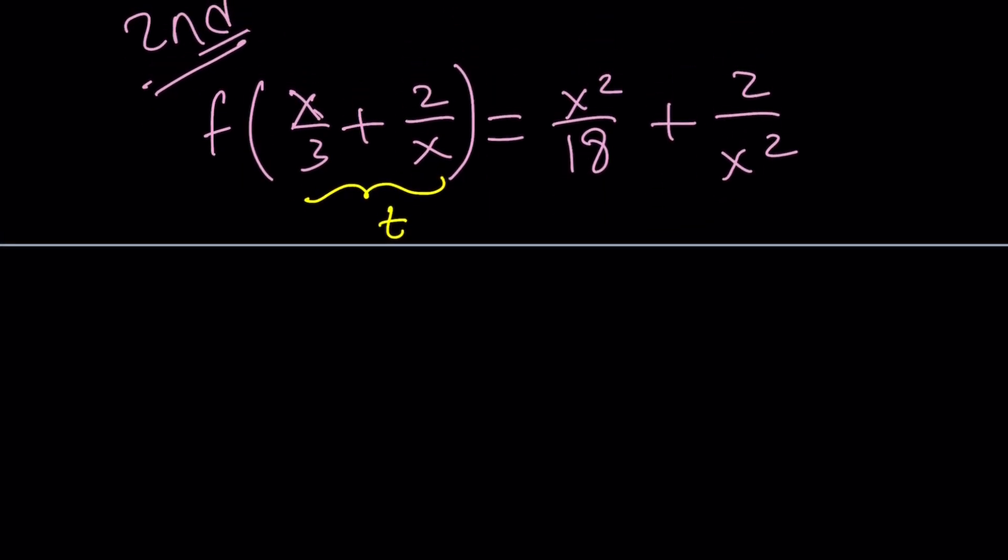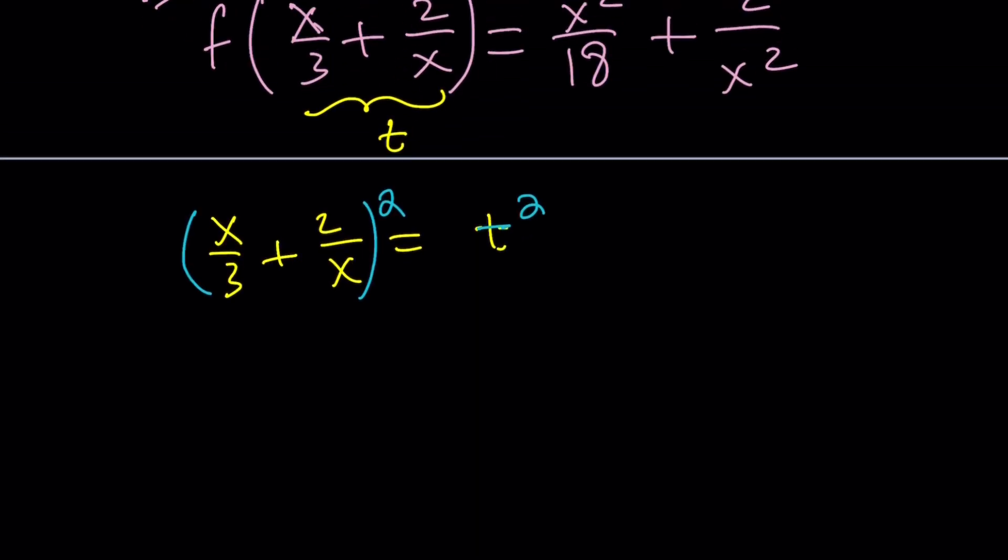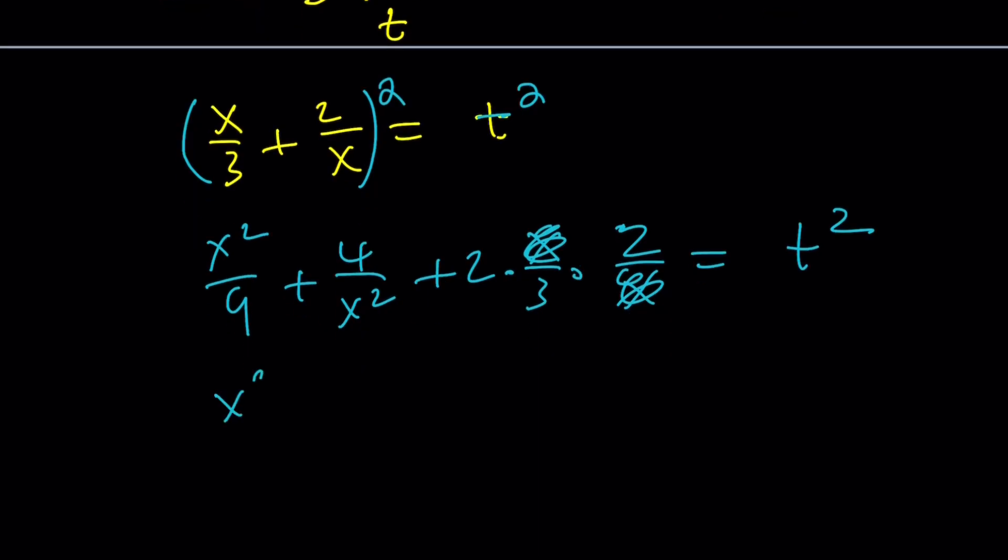Set this equal to t. And square both sides. Because I noticed, obviously, I made up the problem. So I already know the solution, right? I noticed, let's pretend I noticed, that when I square this expression, I get this, right? Plus 2ab. And that's equal to t squared. X cancels out. And I end up with something like x squared over 9 plus 4 over x squared plus 4 over 3 equals t squared.